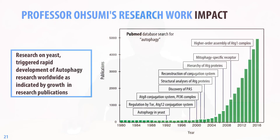This graph shows the number of research papers published in the field of autophagy over the last 30 years, which is an indicator of research activity and general interest in the field. As you can see, the discovery of autophagy in yeast, the identification of ATG genes, and subsequent elucidation of the basic mechanism of autophagy triggered the explosive growth of autophagy research that continues today.